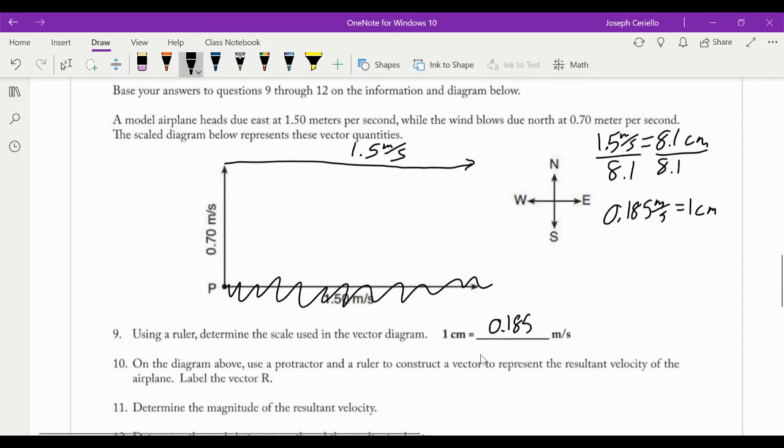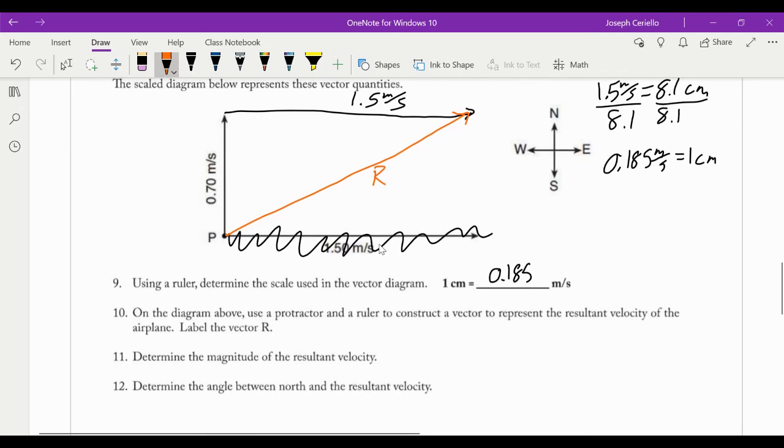So on the diagram, use a protractor and ruler to construct a vector to represent the resultant vector of the airplane. So it's going to go from where it starts to where it ends. This is my resultant. Should be roughly to scale. Now, determine the magnitude of the resultant velocity. How do you do that? You have to physically measure that. You have to physically measure it. So let's see how we can do that. I'm going to kind of work backwards. So just give me a second to physically measure it.